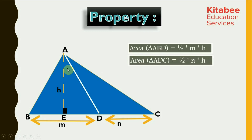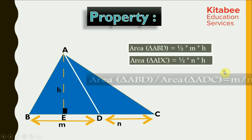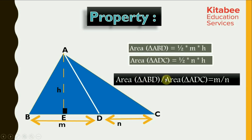Similarly, area of triangle ADC would be equal to half of base into the height. If we take the ratio of both these areas, then half and H get cancelled out, and what we get is area of triangle ABD to area of triangle ADC is M by N. Both these areas are divided in the same ratio as the ratio in which their bases are divided.